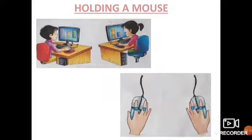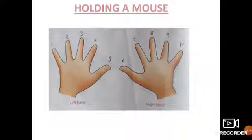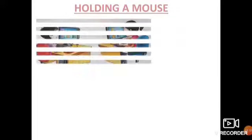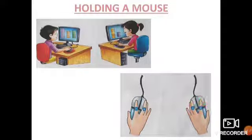Now let us study how to hold the mouse. When holding the mouse with your right hand, your 7th and 8th fingers — that is the first two fingers of your right hand — should be placed on the two buttons of the mouse. Similarly, if using the left hand, you use fingers numbered 3 and 4 on the mouse buttons. This is how you place your fingers on the mouse.